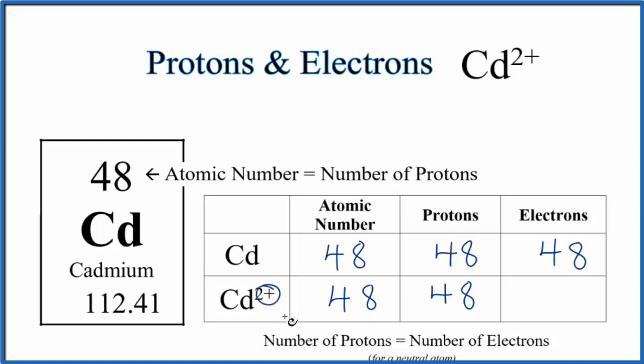For Cd²⁺ though, this 2+ here means we've lost two negative charges, two electrons. So we're going to take away two electrons from 48, so minus two, that gives us 46 electrons.